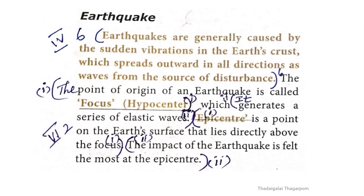Page 162, Earthquake heading. The epicenter is a point on the earth's surface that lies directly above the focus. The impact of the earthquake is felt the most at the epicenter. The point of origin of an earthquake is called the focus, that is the hypocenter. When it generates a series of elastic waves, this is the key characteristic.